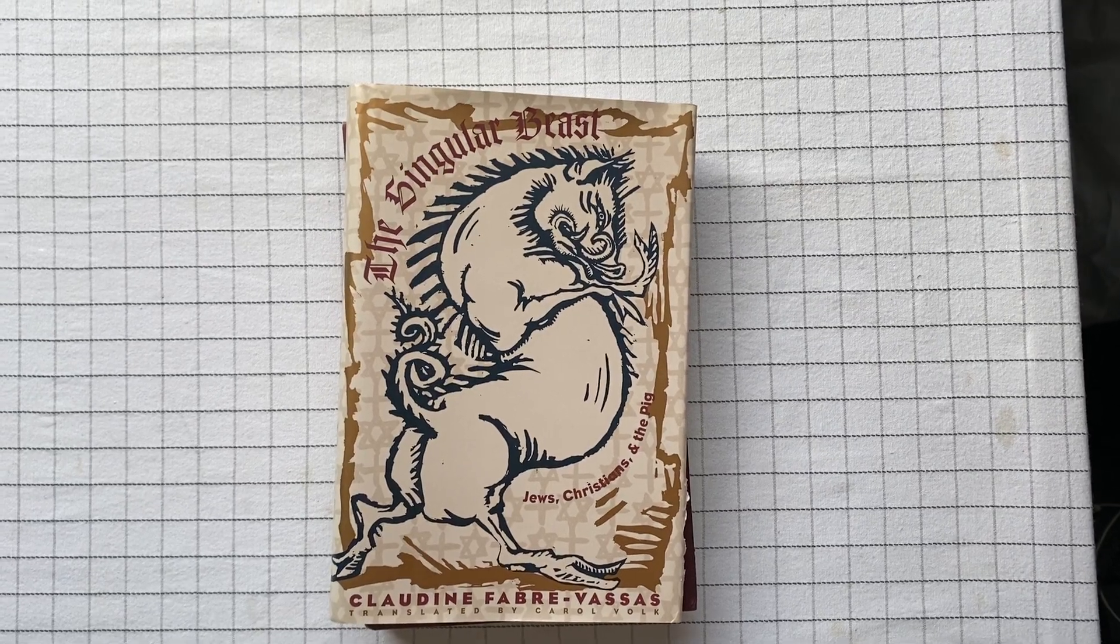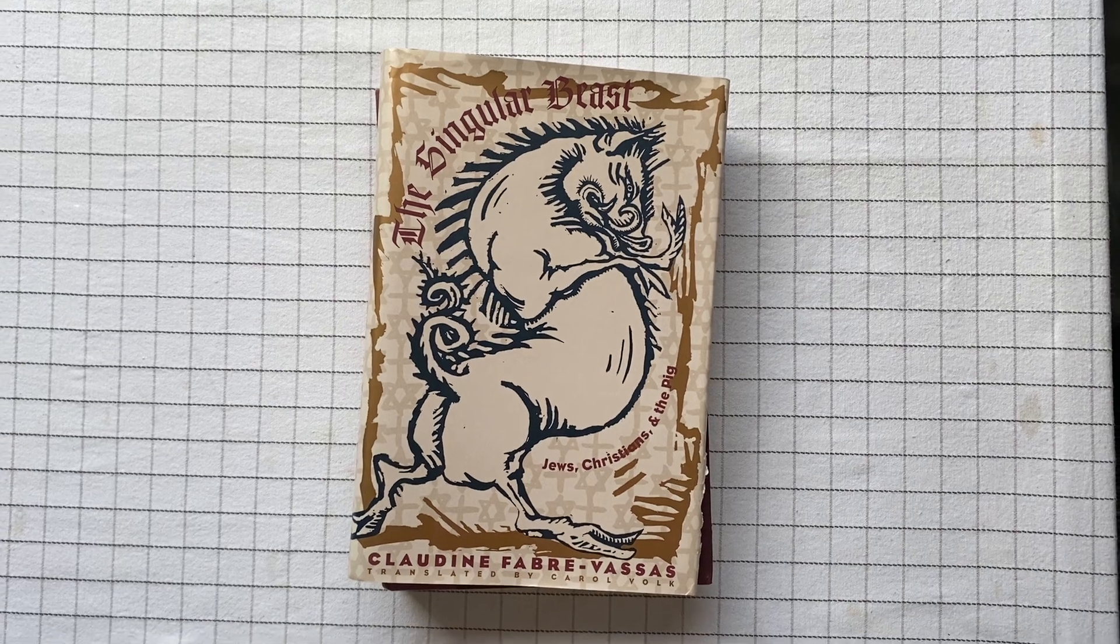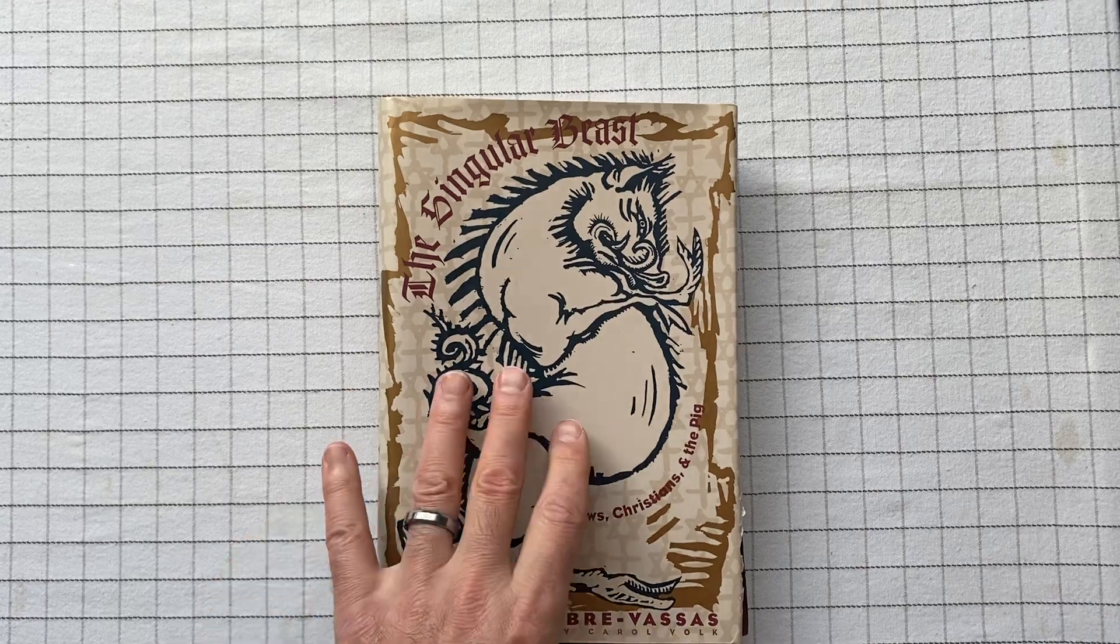The Singular Beast: Jews, Christians, and the Pig by Claudine Fabre-Vassas, translated by Carol Volk from French.